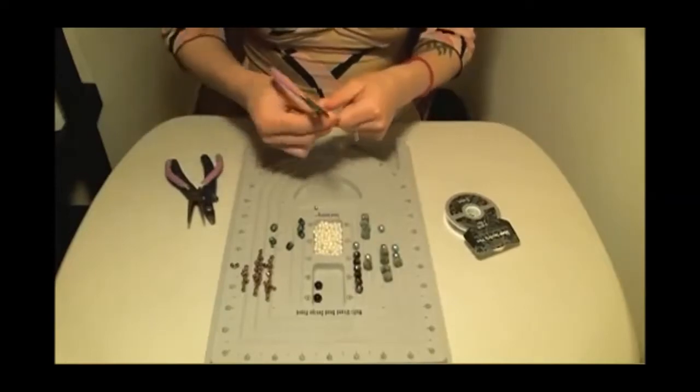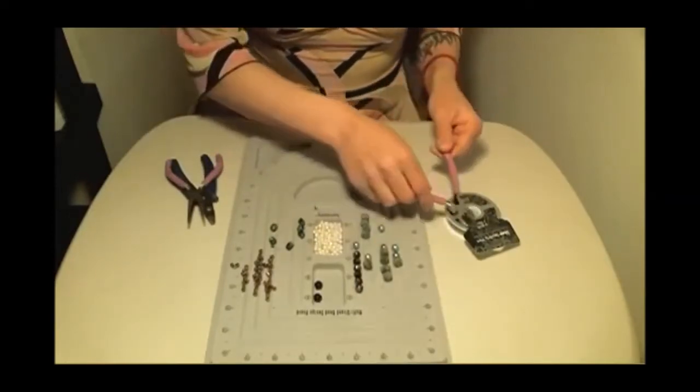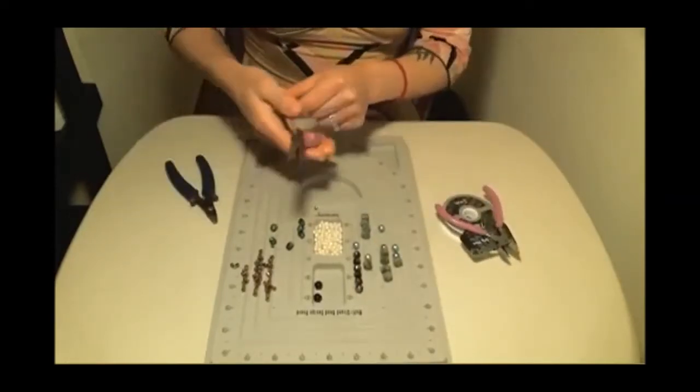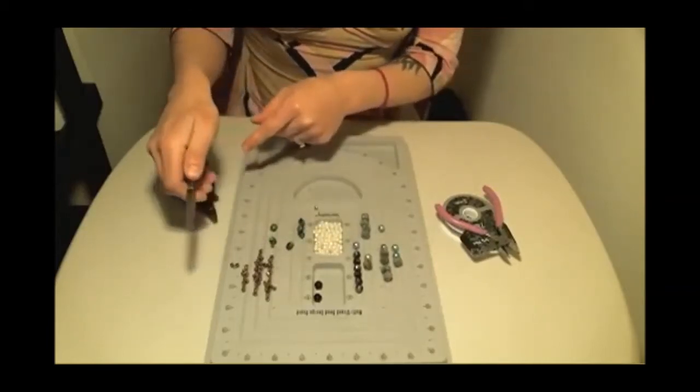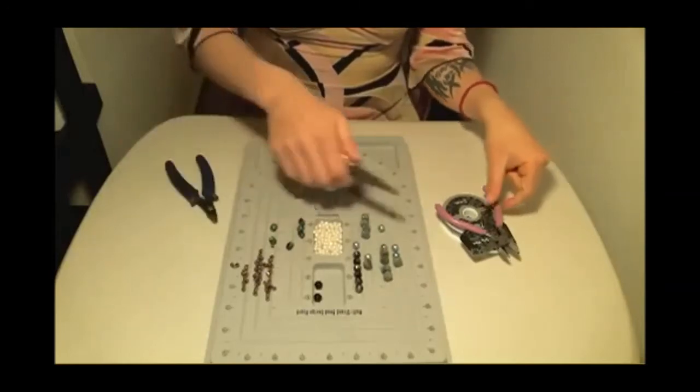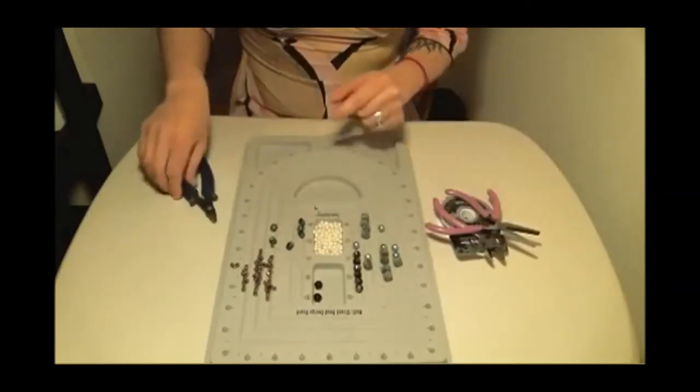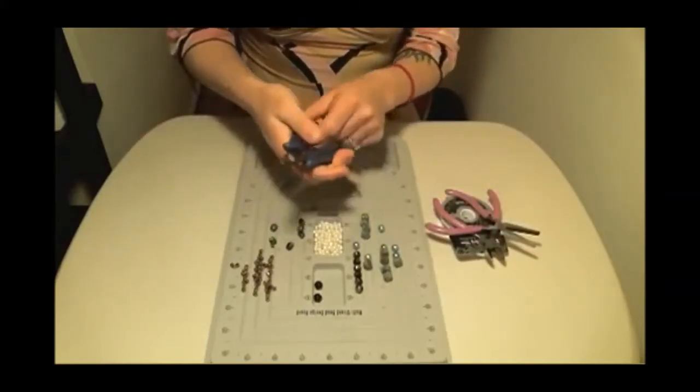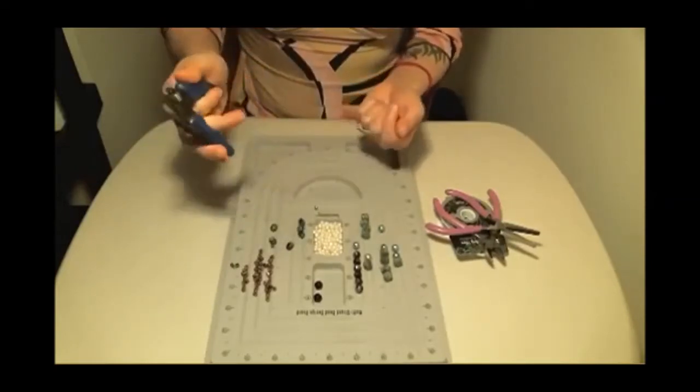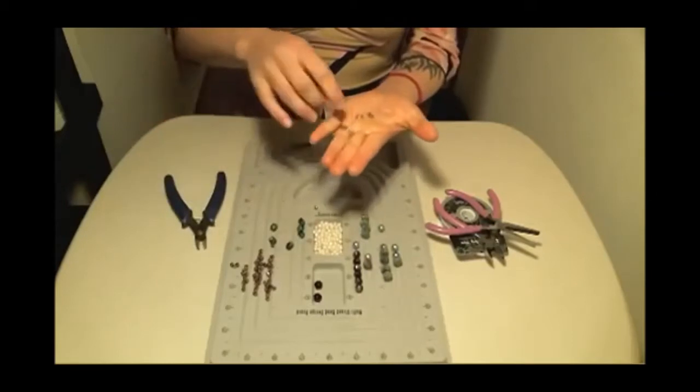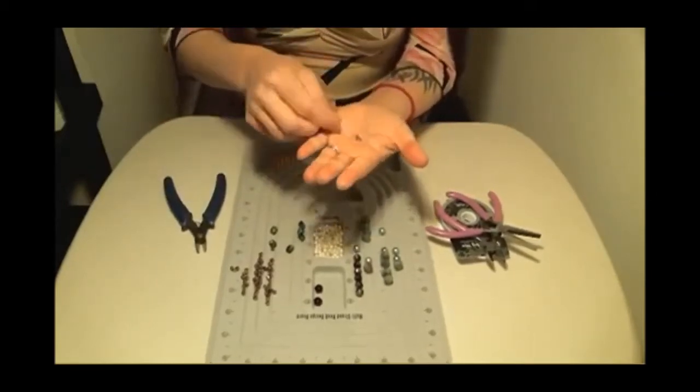The tools that we're going to need are some wire cutters so we can cut the wire. We're going to need some flat nose pliers because we're going to need to grip on the end of each piece of the beading wire. And then we're going to need a crimping tool because we're going to need to attach a crimp bead to each end of the necklace so that we can close it properly.